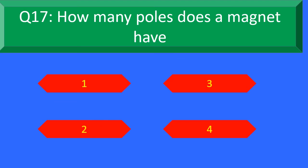Question number 17. How many poles does a magnet have? Option A: 1, Option B: 3, Option C: 2, and Option D: 4. Your time starts now.